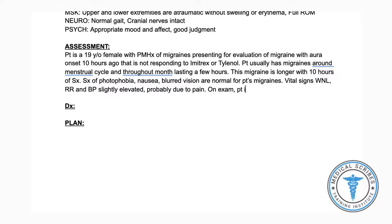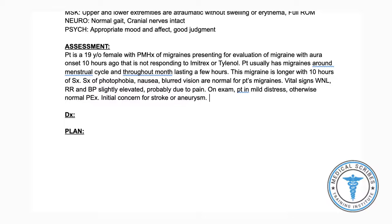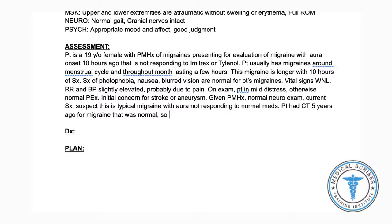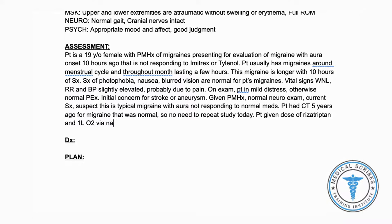On exam, the patient is in mild distress; otherwise her physical exam was normal. I was initially concerned for possible stroke or aneurysm, but given her past medical history, normal neuro exam, and current symptoms, I suspect this is a typical episode of migraine with aura not responding to her normal medications. She had a CT scan five years ago that showed normal results. I don't see any reason to repeat imaging today. We gave her a dose of rizatriptan and one liter of supplemental oxygen via nasal cannula about 30 minutes ago. As long as she is feeling better, my plan is to discharge her home with a prescription for the new medication.